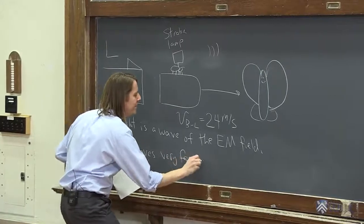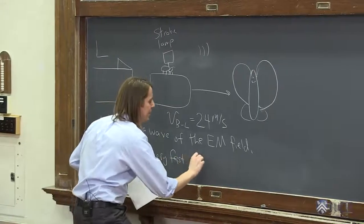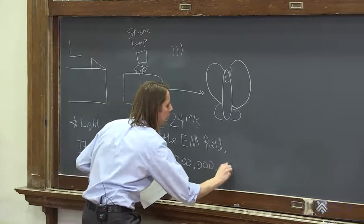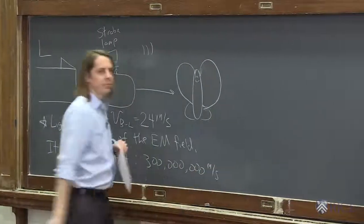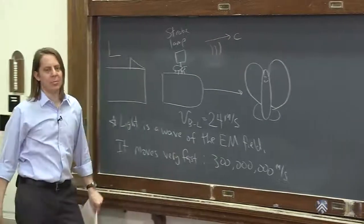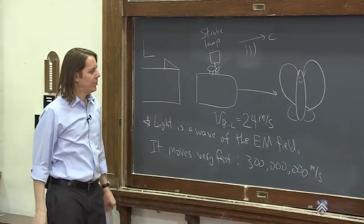Based on the properties of EM fields, we can calculate the speed of light, and it's 300 million meters per second. What we sometimes just call C in physics. Very fast, 300 million meters per second.